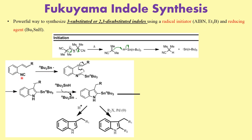So let's jump into what actually happens. The first step: what we have is this isocyanide. The tributyltin radical adds onto this carbon, generating a radical at that position. This radical undergoes cyclization to give the indole moiety. In the next step, tributyltin hydride delivers the hydrogen radical to this particular carbon to give you the desired moiety.